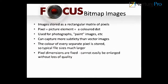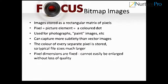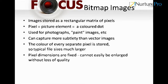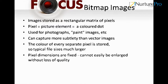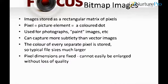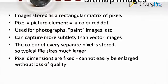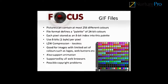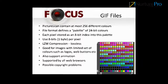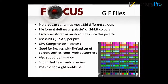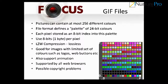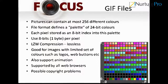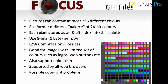Bitmap images store images as a rectangular matrix of pixels. A pixel is a picture element — a colored dot — used for photographs, painted images, and more. Bitmap images can capture more subtlety than vector images, but the color of every separate pixel is stored, so typical file sizes are much larger. Pixel dimensions are fixed and cannot easily be enlarged without loss of quality. GIF images can contain at most 256 different colors.